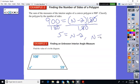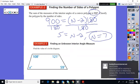So, therefore, N, add 2 to both sides. A 7-sided figure would have 900 degrees in its interior angles. All right.